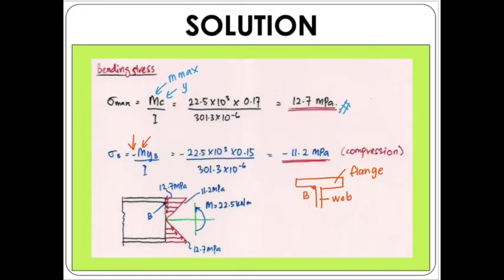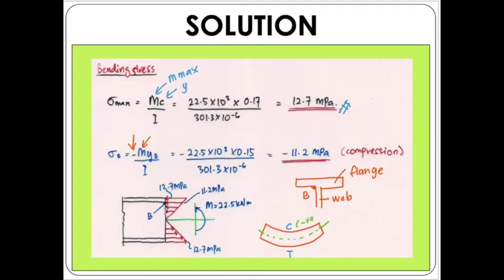When a simply supported beam bends downwards, the top part is subjected to compression and the bottom part is subjected to tension, with the neutral axis in the middle. Therefore, the bending stress is negative for compression (top) and positive for tension (bottom). This is why we apply the negative sign for point B, which is in the compression zone.